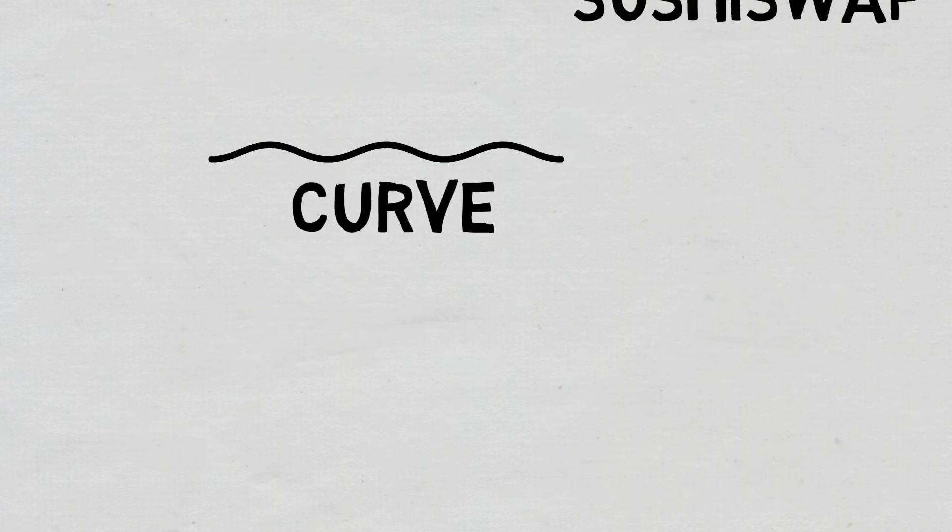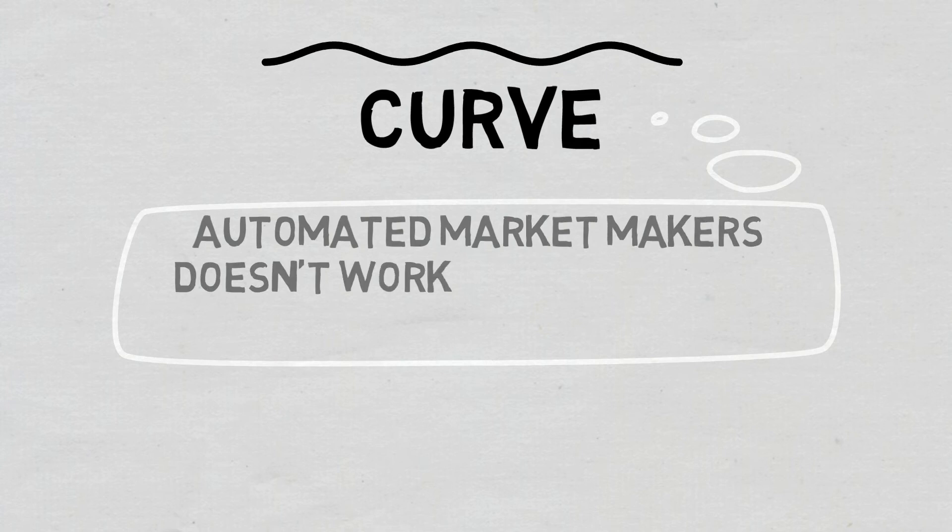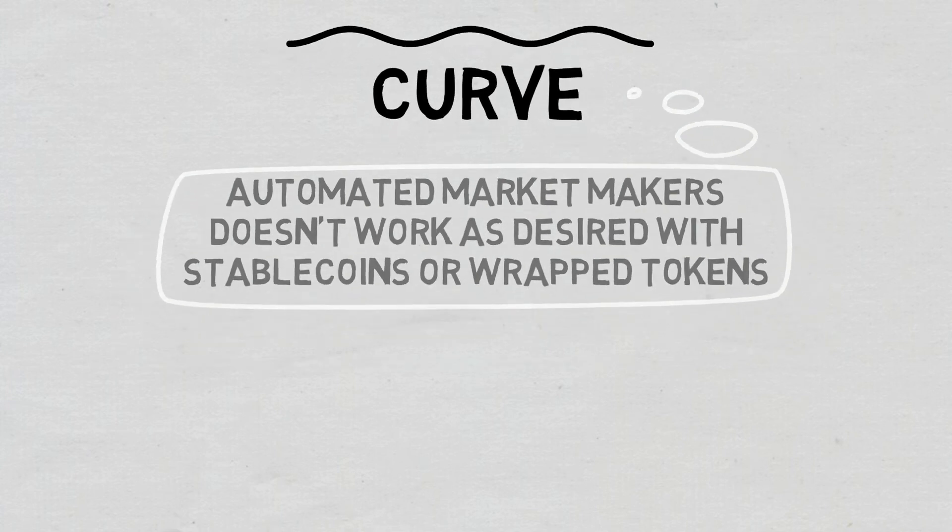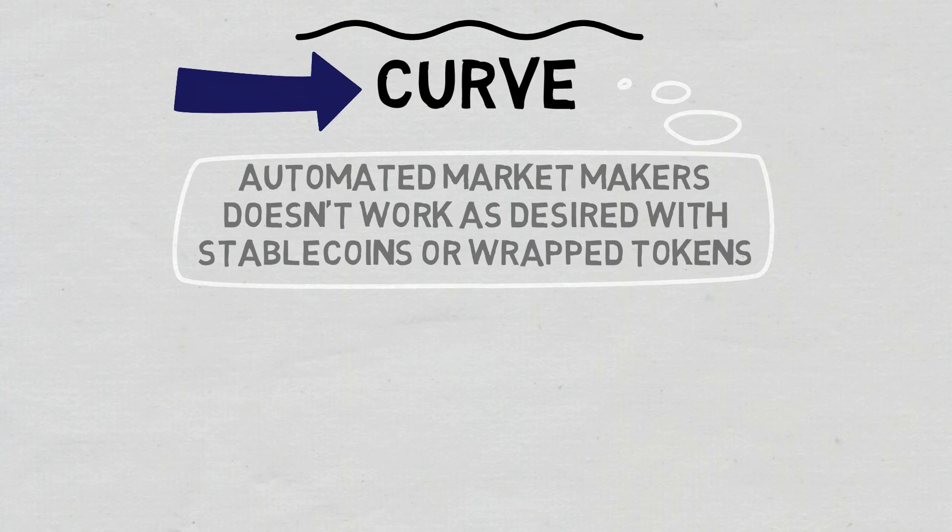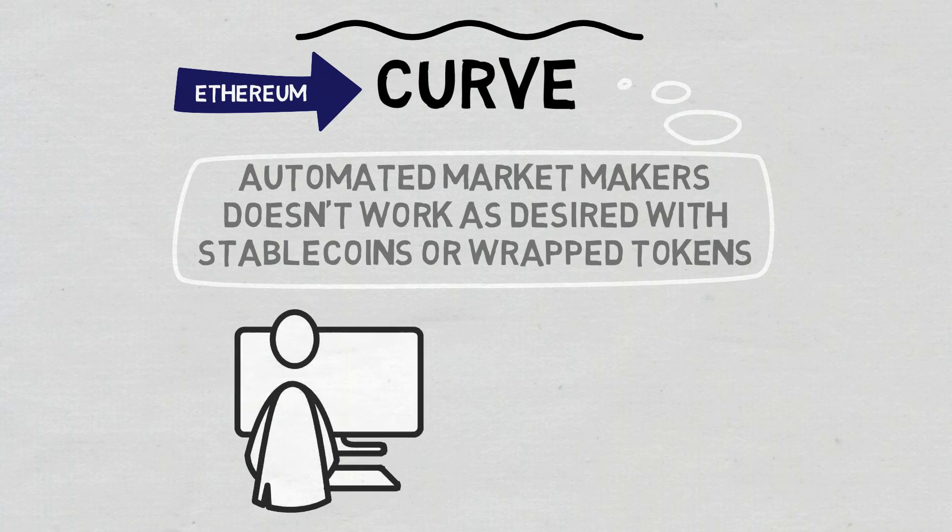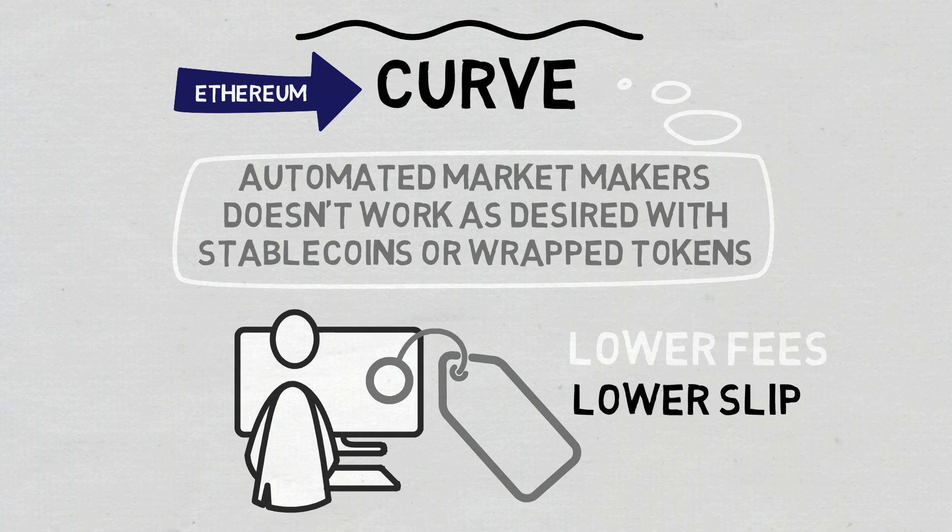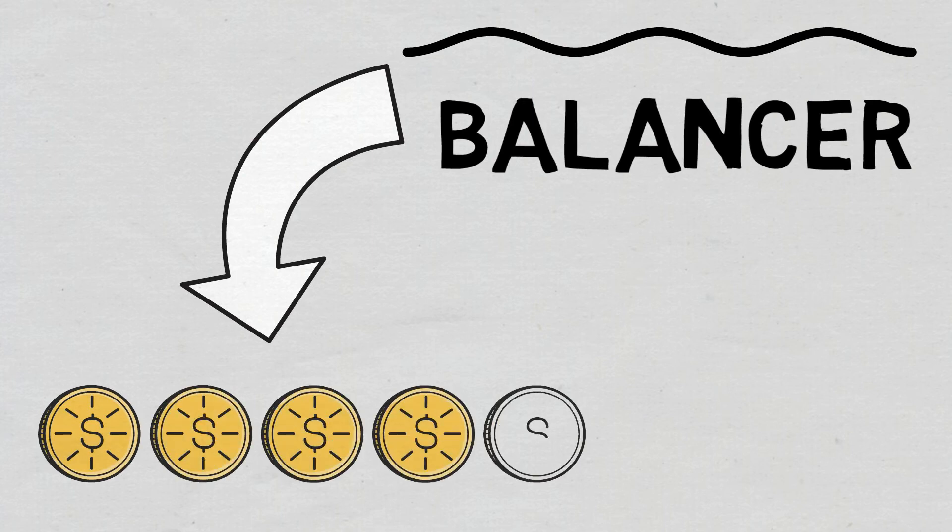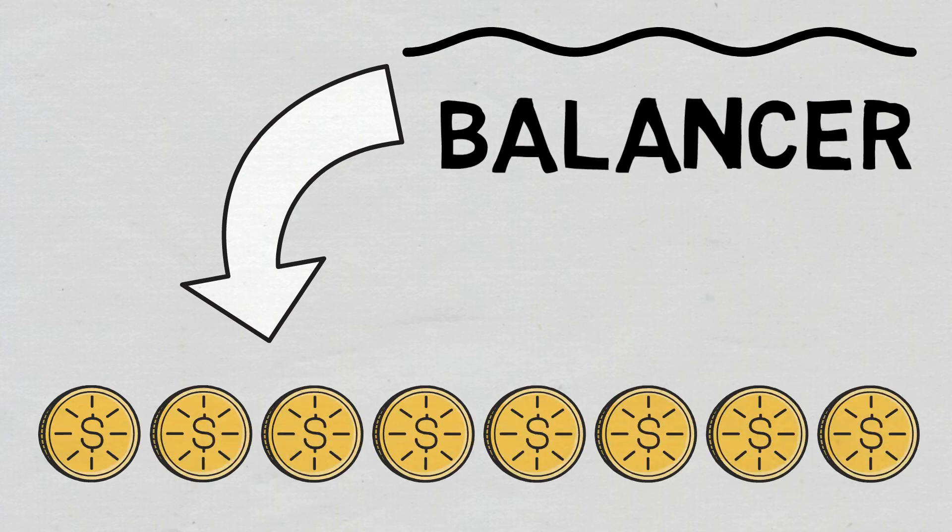After realizing that the concept behind automated market makers doesn't work as desired with stablecoins or wrapped tokens, Curve, an exchange liquidity pool on Ethereum, implemented a slightly different algorithm and now offers lower fees as well as lower slippage. Balancer also approached liquidity pools from a different standpoint, allowing for as many as 8 tokens in a single liquidity pool instead of the typical 2 assets.